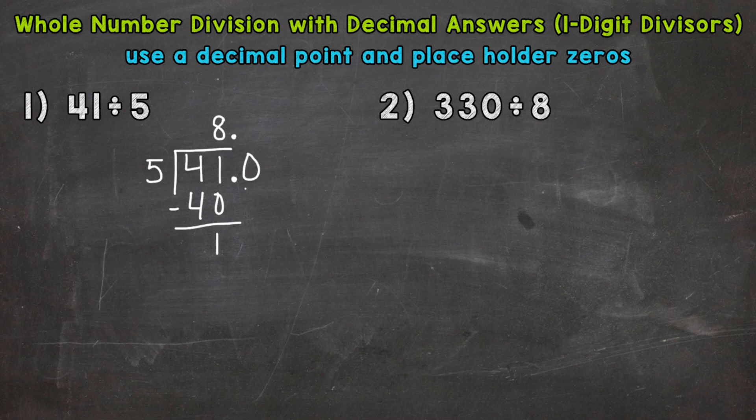Let's bring that down and continue. So now we have 10 divided by 5. How many whole groups of 5 out of 10? Two. Let me extend that there. Now we multiply 2 times 5 is 10. Subtract, and we get that clean cut zero. That's what we're looking for. Once we get that zero, we are done. So our answer is 8 and 2 tenths.